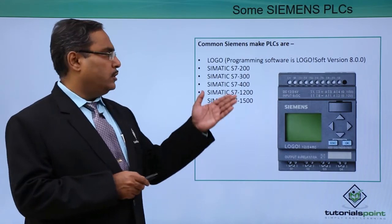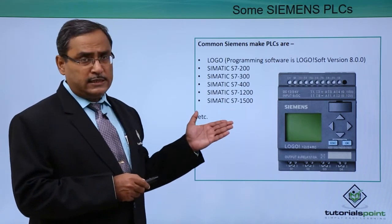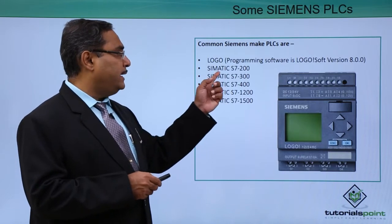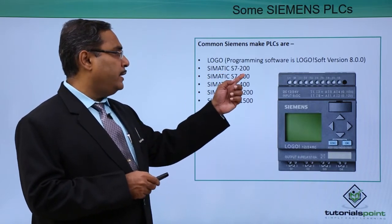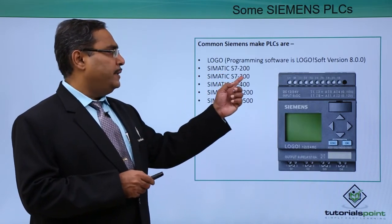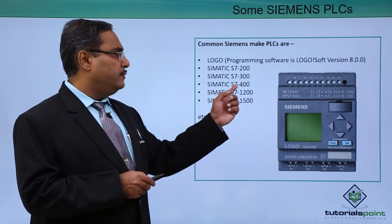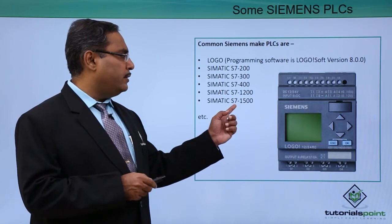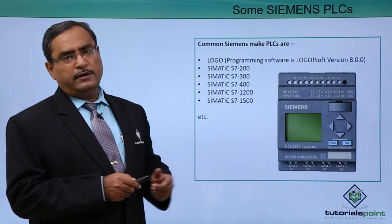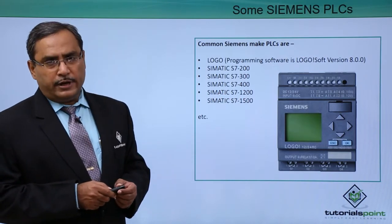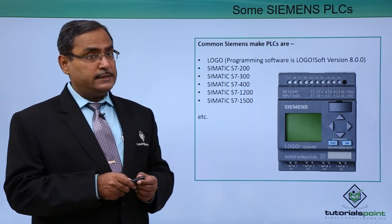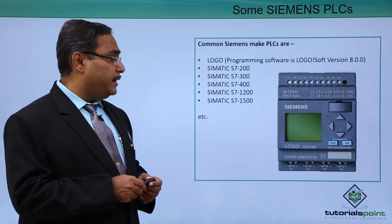Other PLCs that Siemens has produced include Simatic S7200, S7300, S7400, S71200, and S71500. These are the different PLCs Siemens is having. Here we are going for the entry level PLC, that is the Logo software for the Logo PLC.